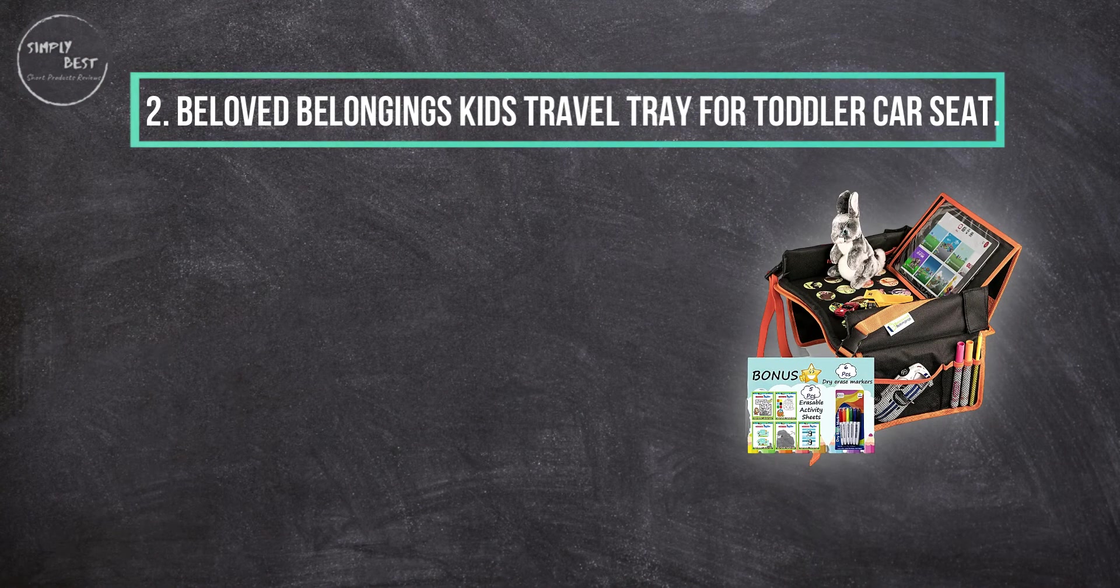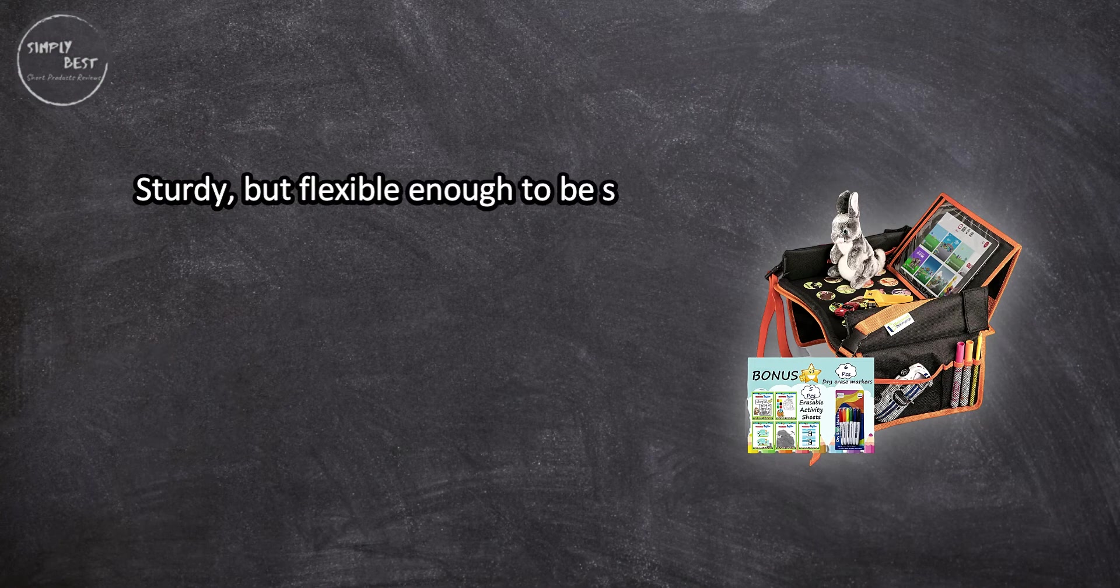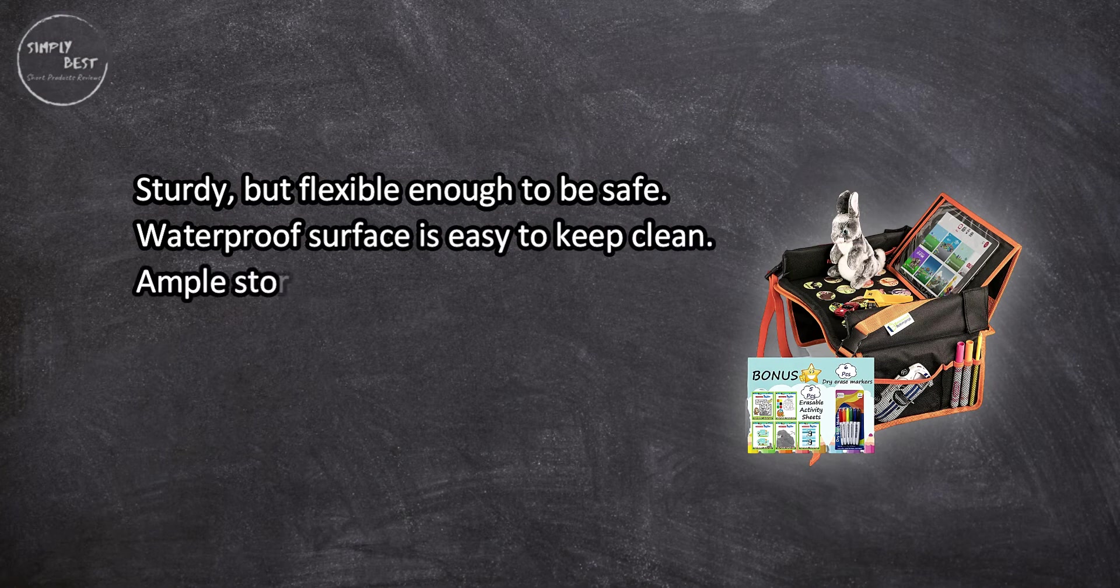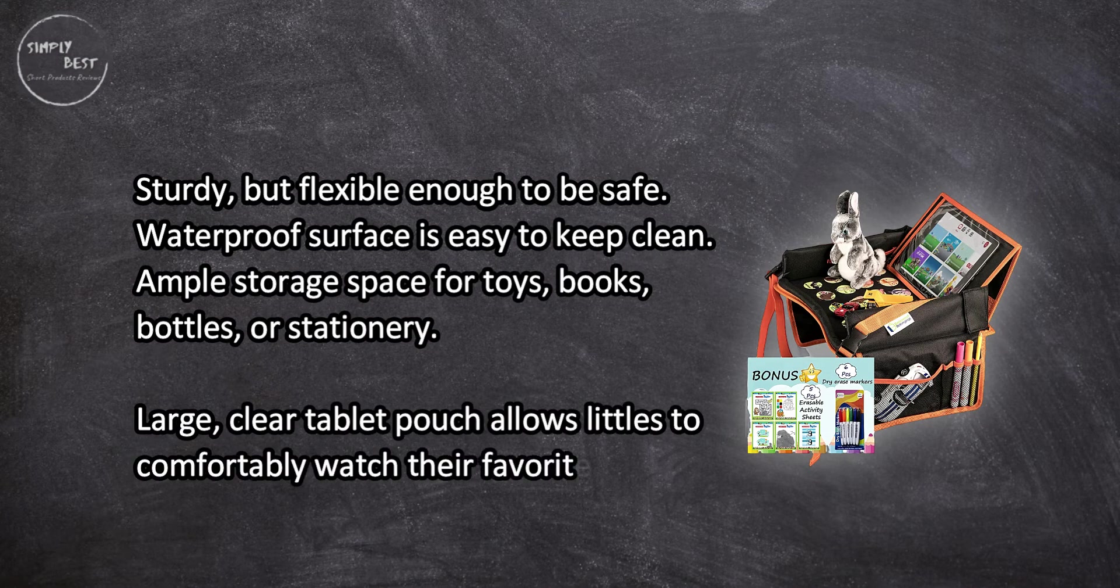At number two, Beloved Belongings kids travel tray for toddler car seat. Sturdy but flexible enough to be safe. Waterproof surface is easy to keep clean. Ample storage space for toys, books, bottles, or stationary. Large clear tablet pouch allows littles to comfortably watch their favorite shows.